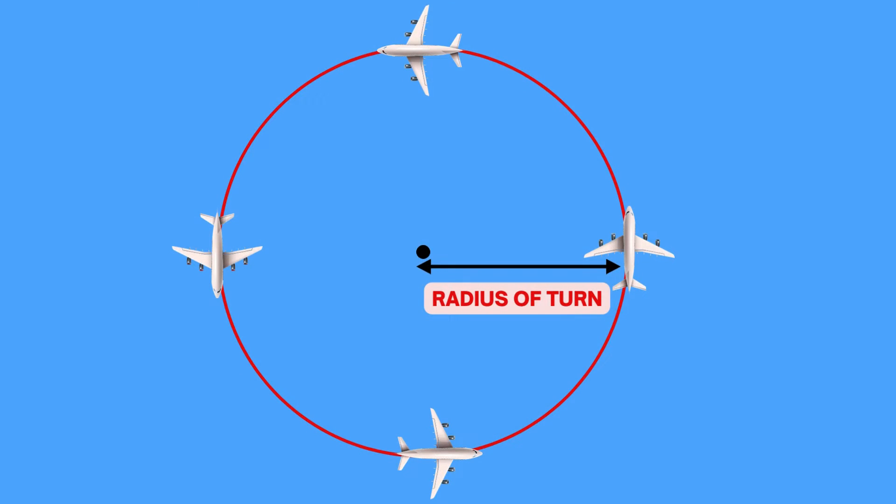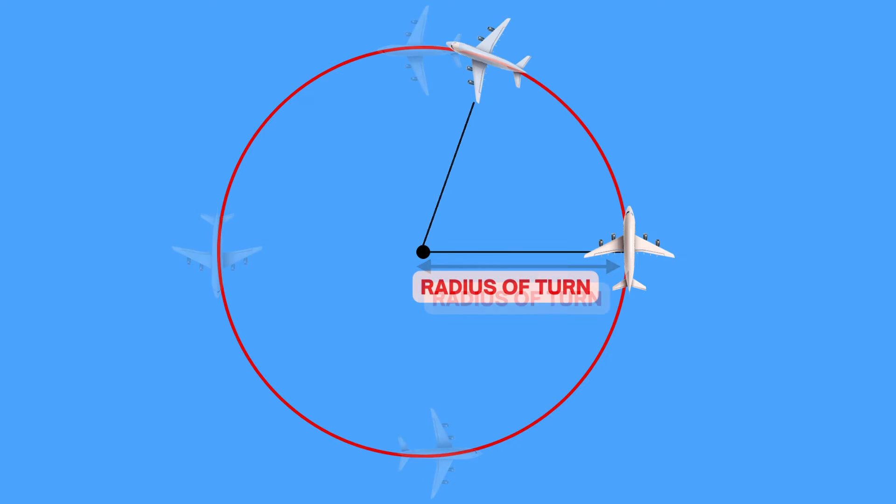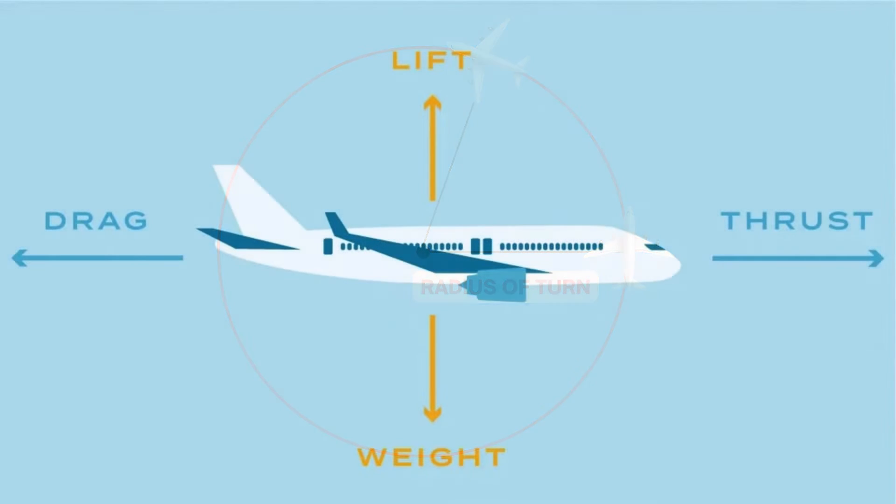Radius of turn is the radius of circle in air which the flight path of an aircraft would make if it is turned through 360 degrees. But even if you turn through smaller angles, the flight path would be an arc of a circle with the same radius as if it has turned through 360 degrees. Let us study some aerodynamics to calculate the radius of turn.